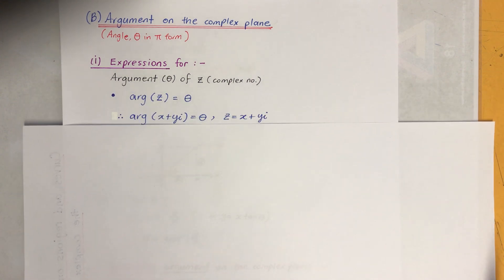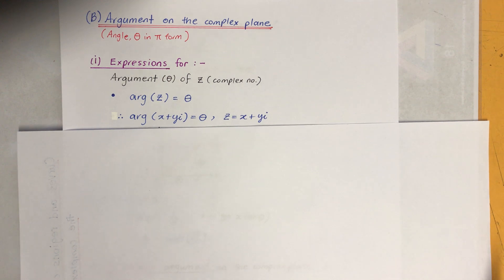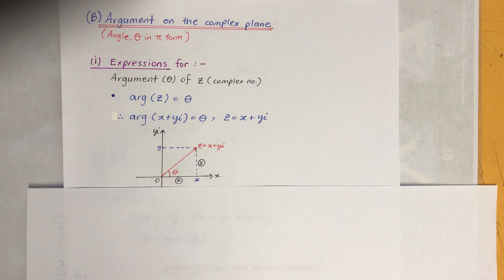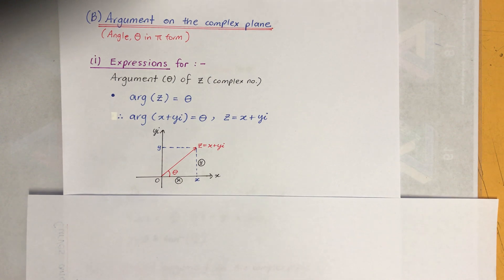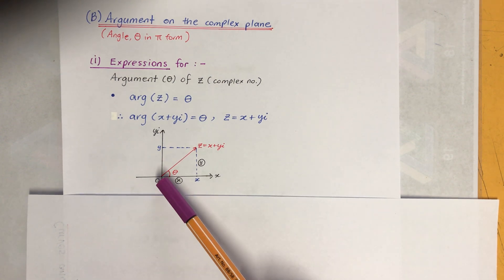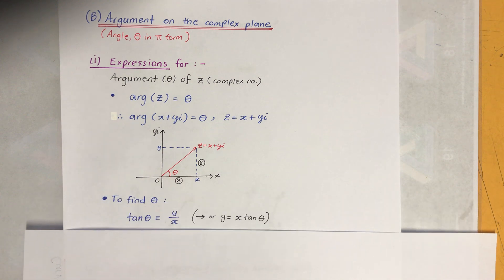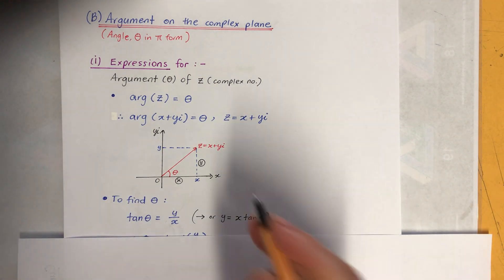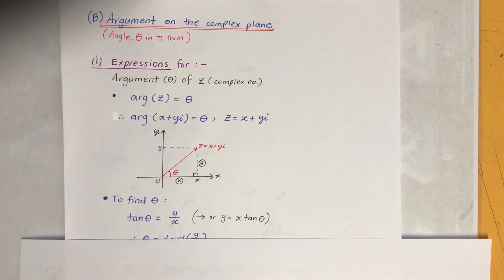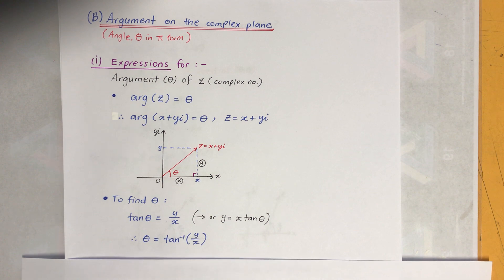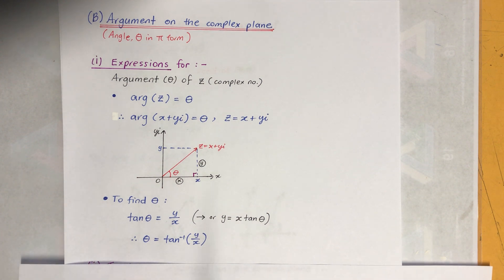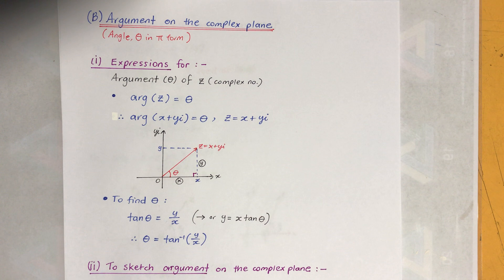We write z equals x plus yi and we can sketch this on the complex plane. To find theta we use tan, because that's the right angle, so you can use SOH CAH TOA. You can write it in terms of y equals something, and of course theta equals inverse tan of y over x. Please memorize that.